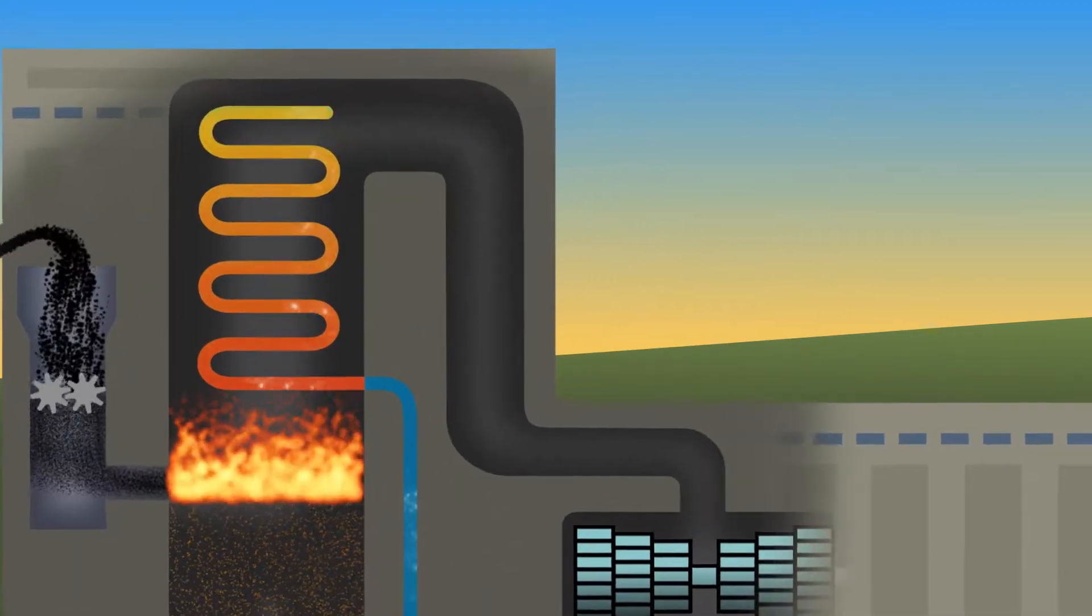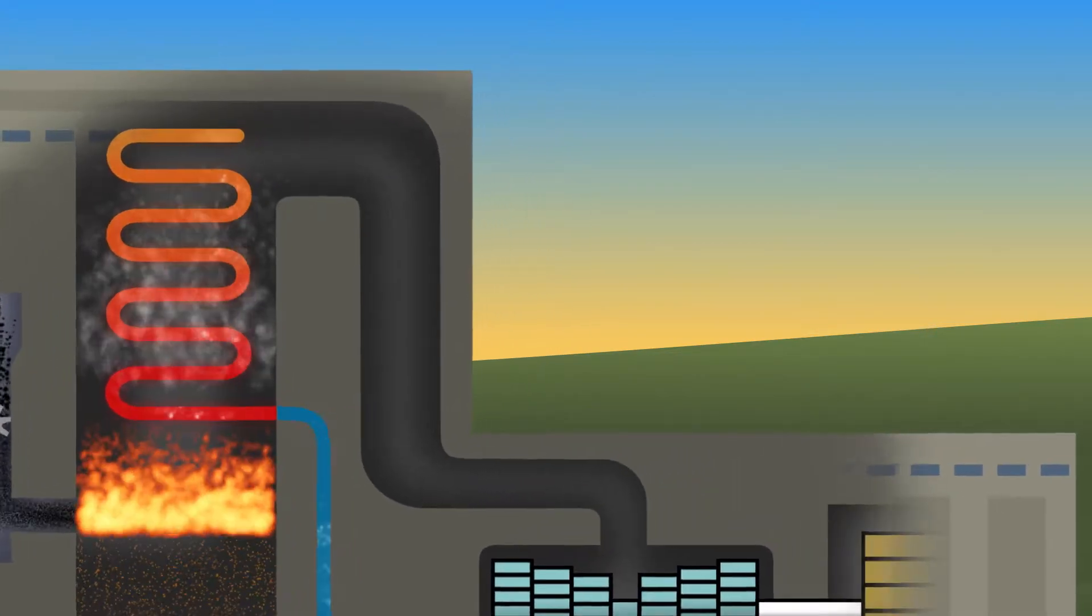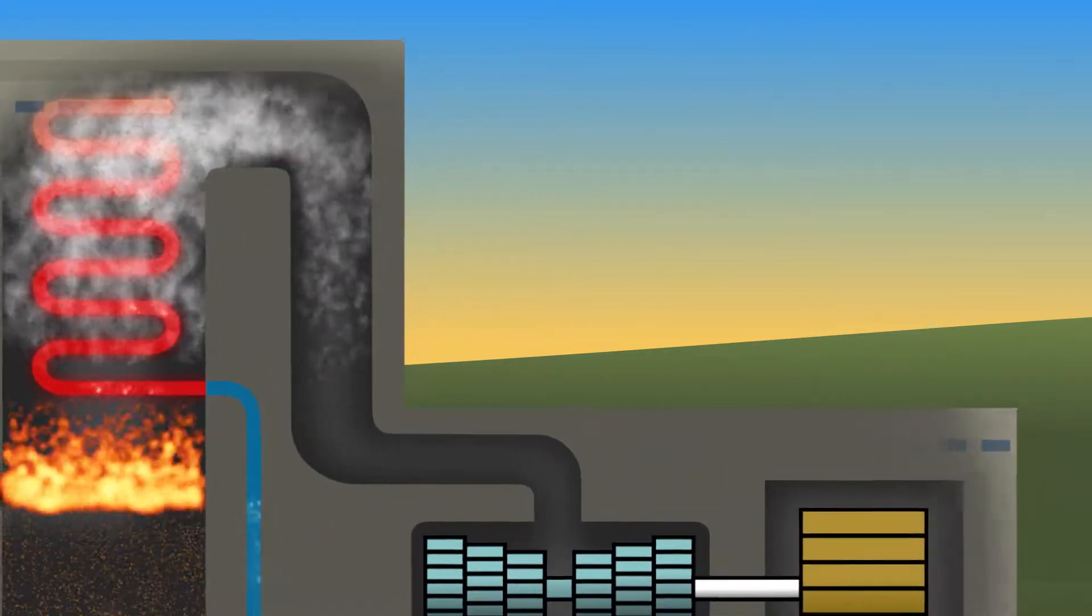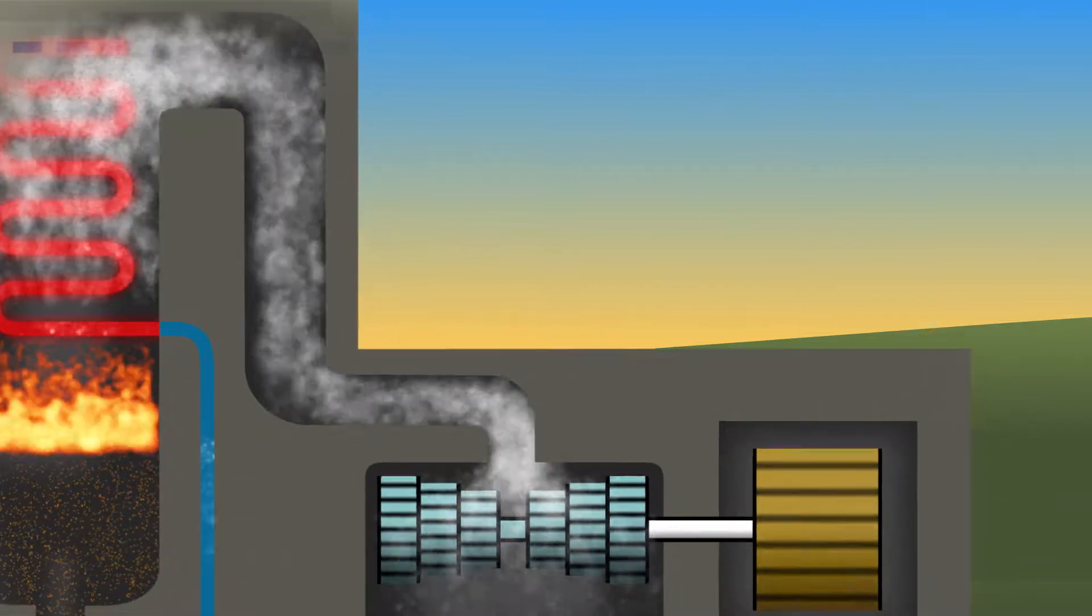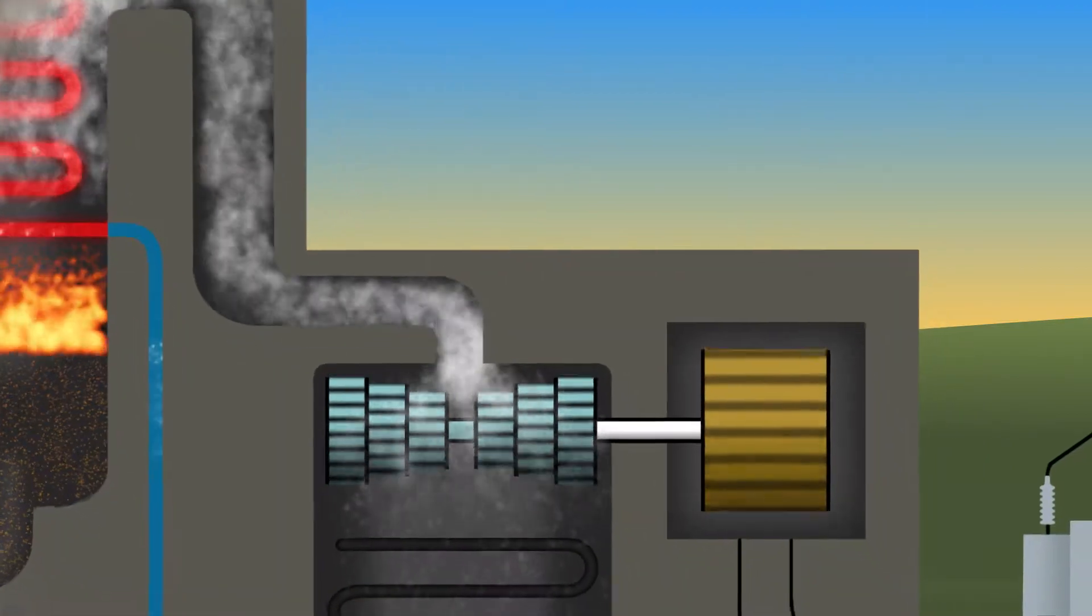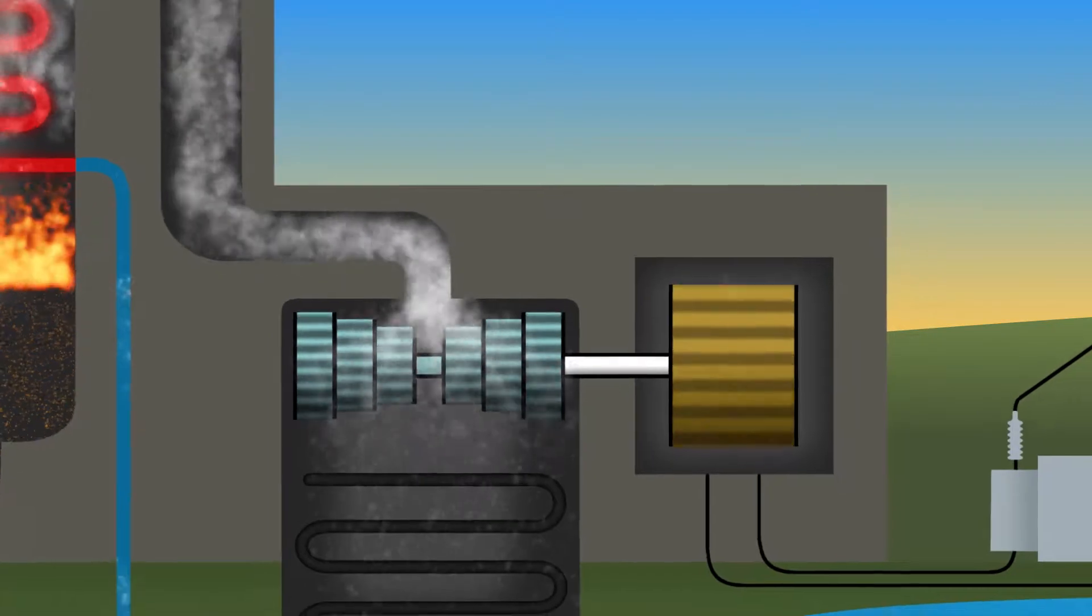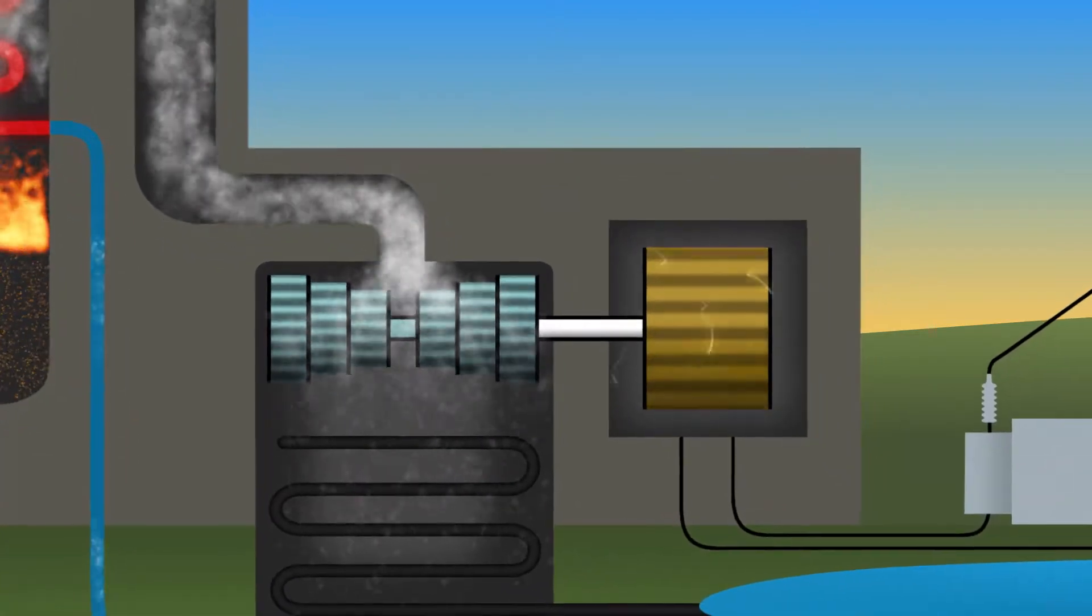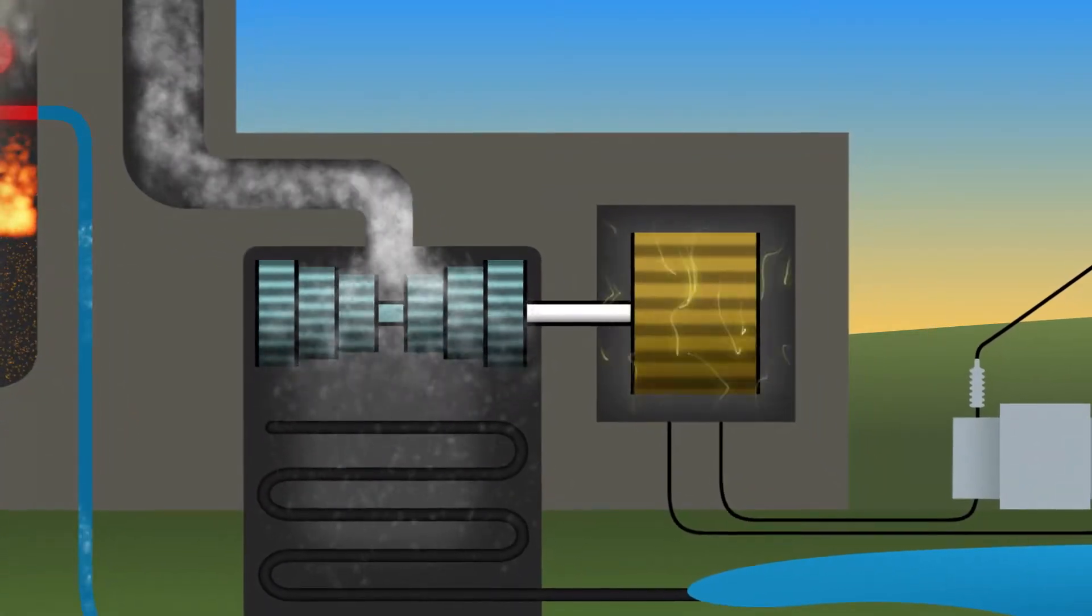The heat inside the boiler creates steam with intense pressure, enough to spin a turbine and a massive generator. The generator rotates long coils of copper wire inside powerful magnets, turning the spinning motion, that is kinetic energy, into electricity.